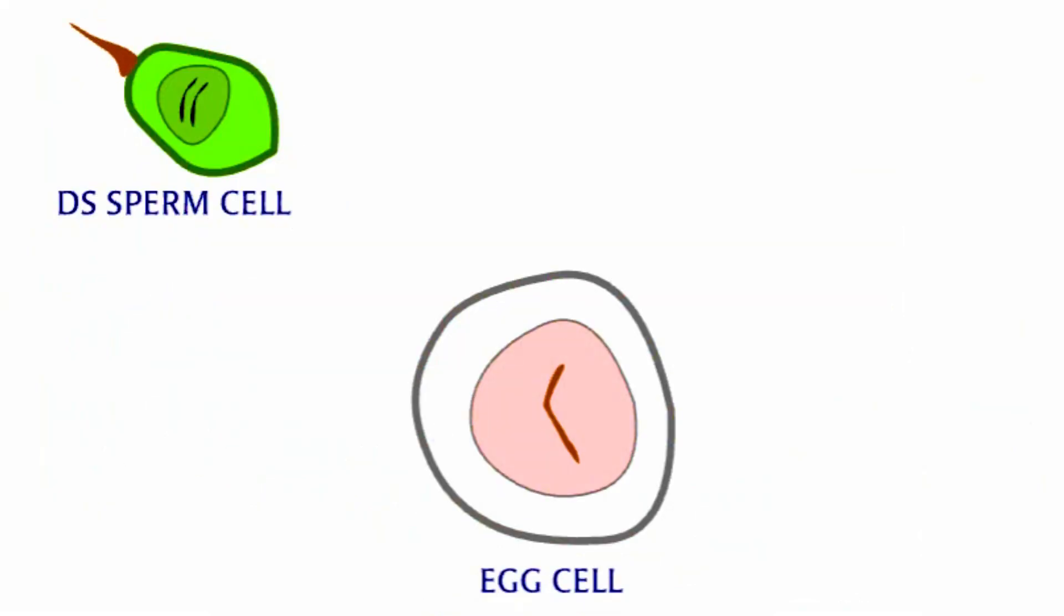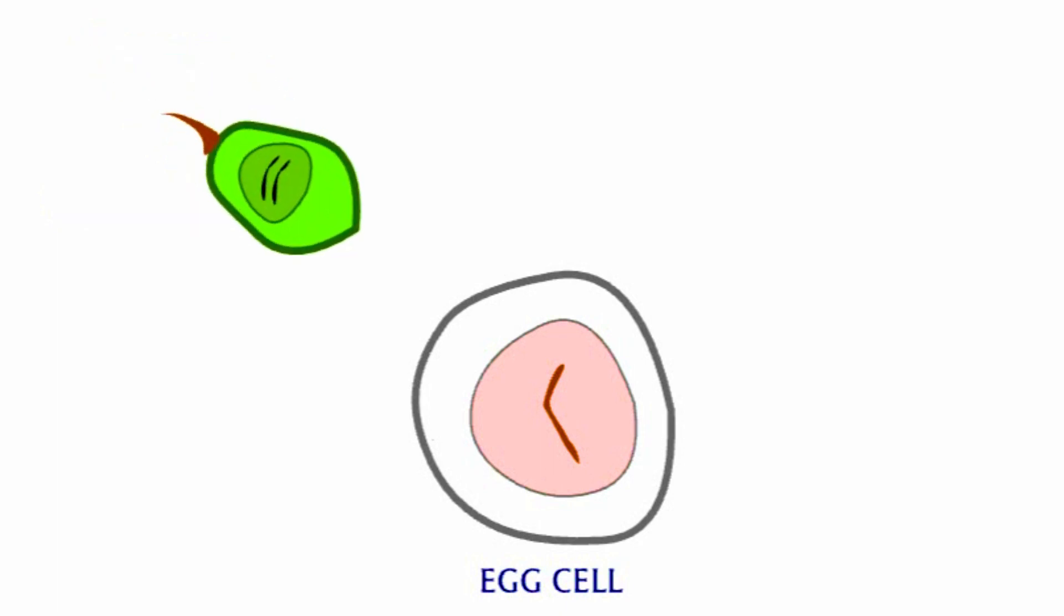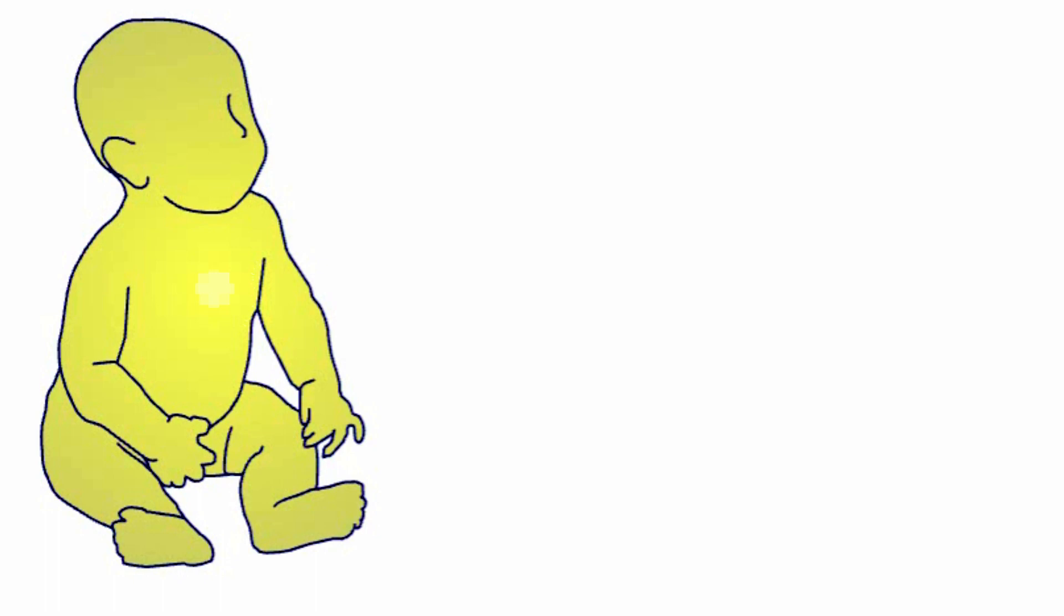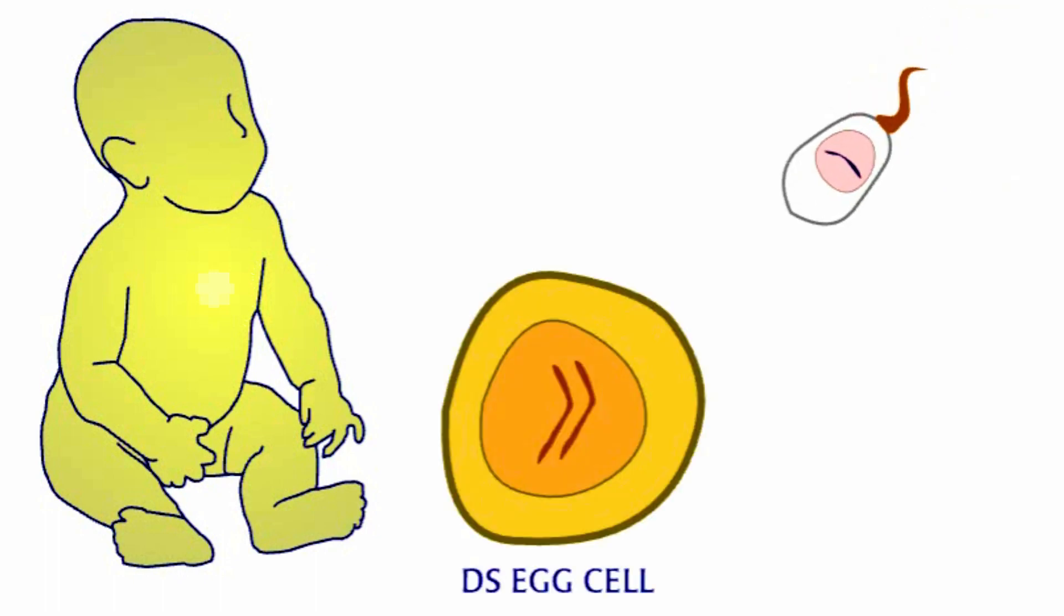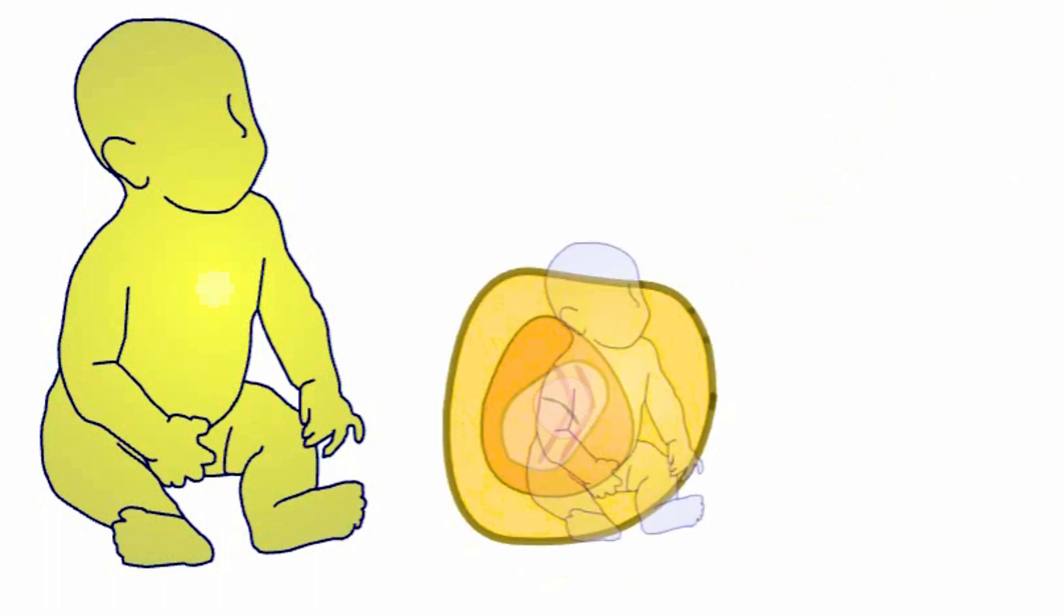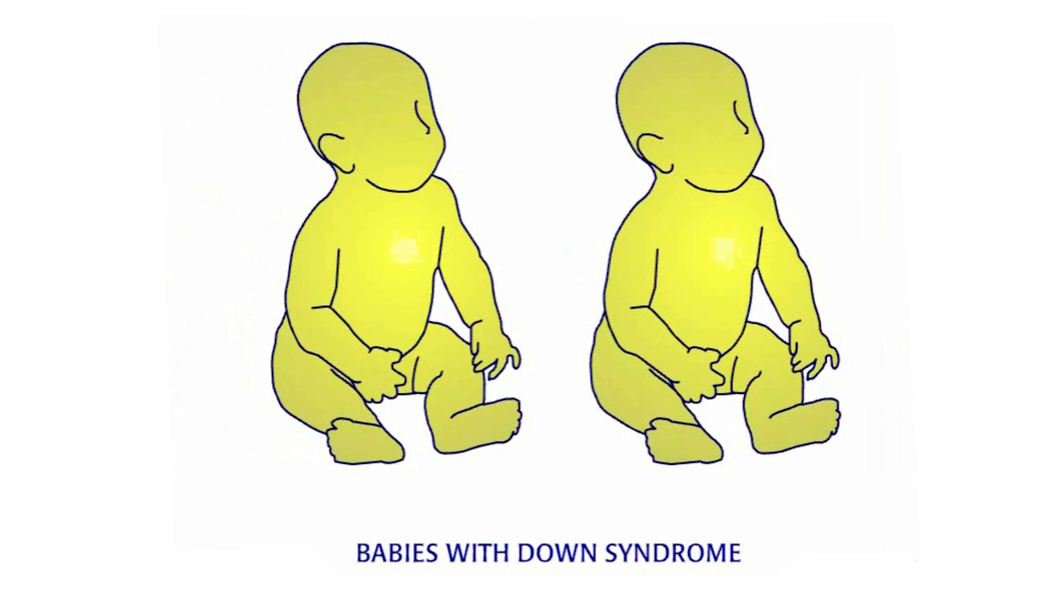Fertilization of an egg cell by a faulty sperm cell can cause Down syndrome. But recent research implicates abnormal egg cells in the majority of cases. Despite years of research, no one knows what causes non-disjunction to occur.